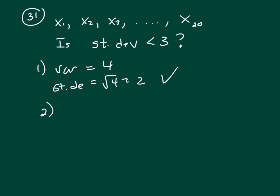Let's look at clue 2. Clue 2 says for each measurement, the difference between the mean and that measurement is 2. Well, let's look at the formula for variance.